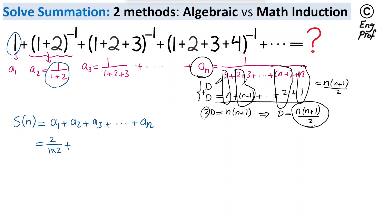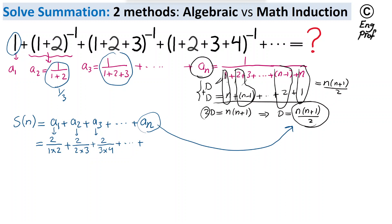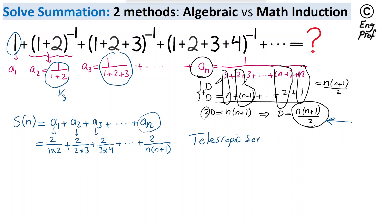Instead of 1 over 1 plus 2 plus 3, I can write 2 divided by 3 times 4. This continues, and for the nth term I can write 2 divided by n times n plus 1. This is helpful because this is effectively a telescoping series, meaning subsequent terms are going to cancel out each other.